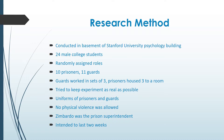Zimbardo wanted to make the experiment as real as possible. To do this, he had the prisoners arrested at their own homes without warning and sent to the local police station, where they were fingerprinted, photographed, and booked. Zimbardo then had them blindfolded and driven to the mock prison so they would think it was real and not know their prison was actually in a university basement.